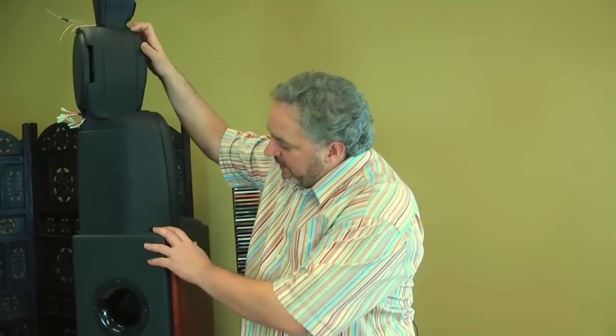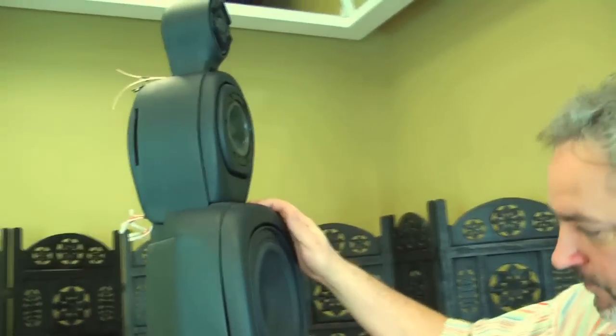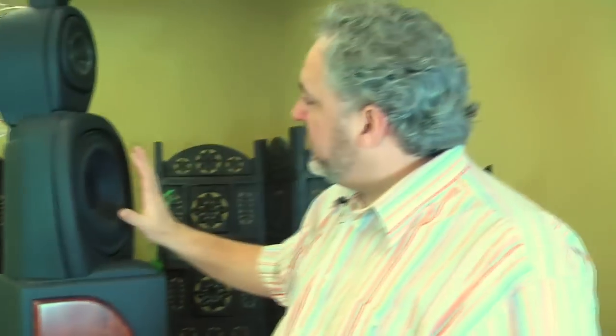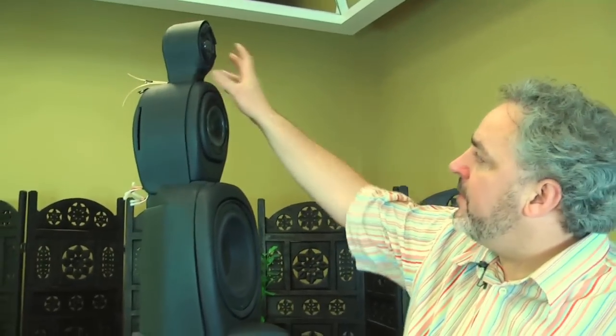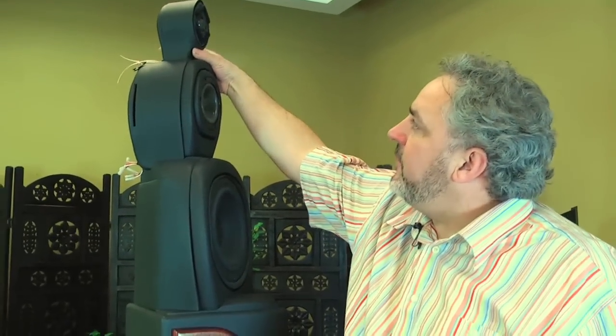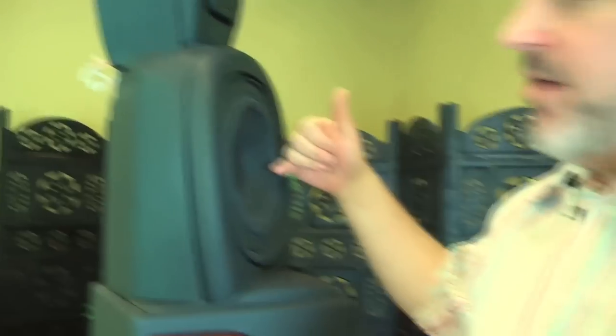What we're looking at here is a Green Mountain Audio Calypso, and the Green Mountain Audio Calypso is both time and phase coherent. You can see there are three separate drivers: the bass driver, the mid-range driver, and the tweeter. Each one is in a separate cabinet and you can see the difference in where these drivers are located on the loudspeaker.